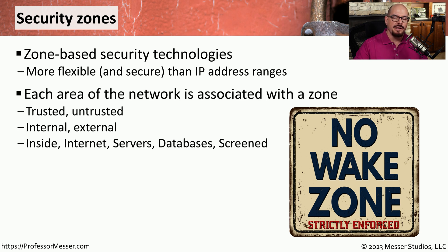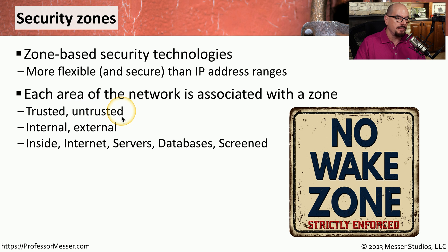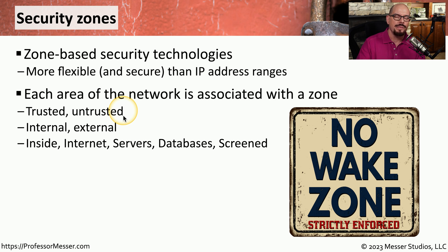Each section of the network would be assigned a zone. For example, you might create a very basic network design where part of the network can be accessed from the outside and part of the network is prohibited from outside access. You might assign one of those zones as a trusted zone and the other as the untrusted zone. By themselves, those names don't tell us a lot about what those zones do. Some organizations refer to these as an internal zone and an external zone.